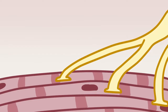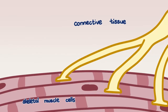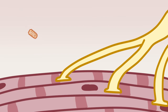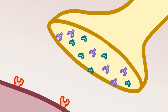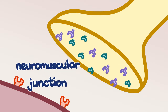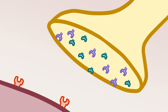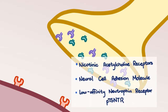When bitten, the saliva comes in contact with connective tissue and skeletal muscle cells. The virus will try to find its way to the closest peripheral nerve. Between the skeletal muscle cells and the nerves is a space known as the neuromuscular junction, where there are lots of receptors for communication between the nerve and the muscle. The receptor the virus binds to is still unclear, but the three candidates are nicotinic acetylcholine receptors, neural cell adhesion molecules, and low-affinity neurotrophin receptor P75NTR.